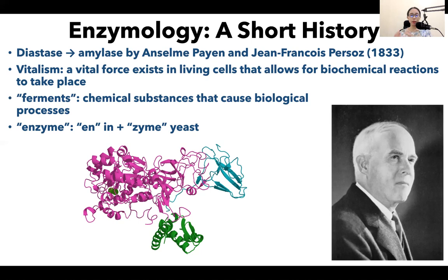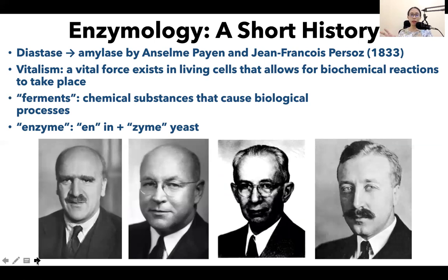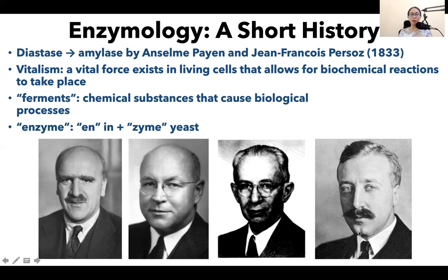At the time, Sumner's conclusion was received with skepticism. But in the 1930s, other researchers were also able to crystallize other enzymes. John Northrop and Moses Kuhnitz crystallized pepsin, trypsin, and other digestive enzymes and confirmed that they too are proteins. Together with James Sumner and Wendell Stanley, they were awarded the 1946 Nobel Prize in Chemistry — 50% credited to Sumner, 25% to Northrop, and 25% to Stanley.